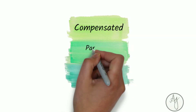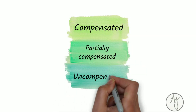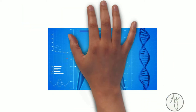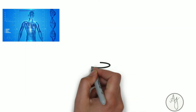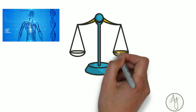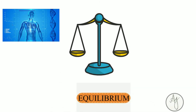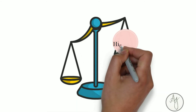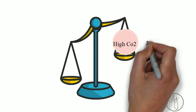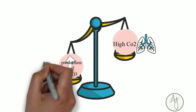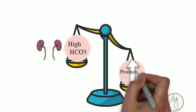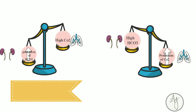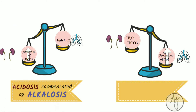Let me quickly bring in the concept of compensated, partial compensation, and uncompensated. This is the miracle of the human body. Our body always tries to maintain an equilibrium — a high carbon dioxide value is compensated by increased bicarbonate secretion by our kidneys.